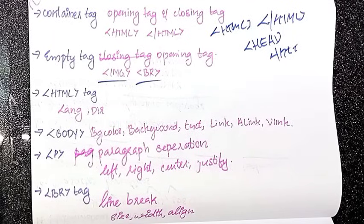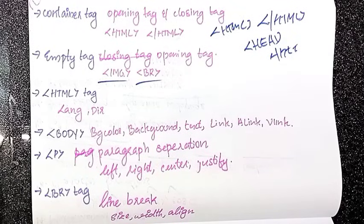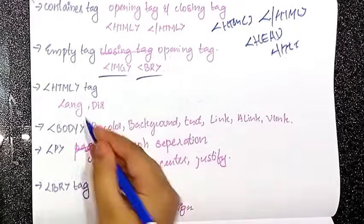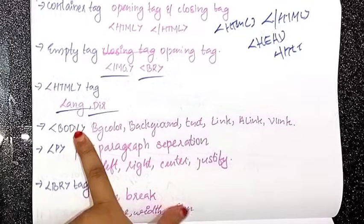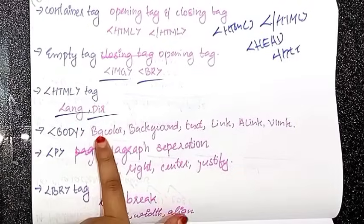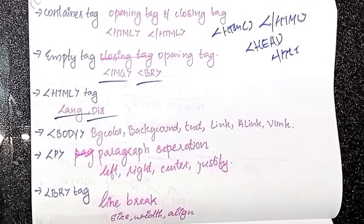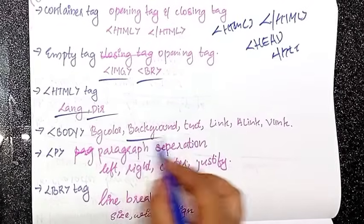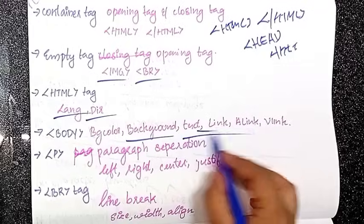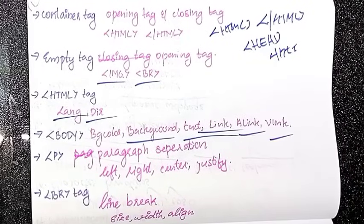If you want to add a link to the video, use the anchor tag in HTML. Then type the body tag with attributes: bgcolor, background, text, alink, vlink, and link.